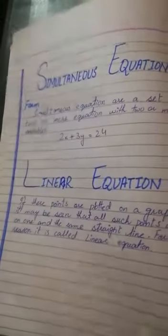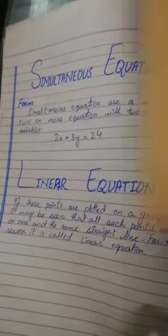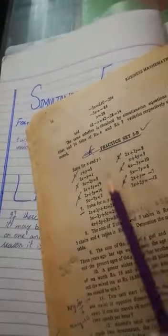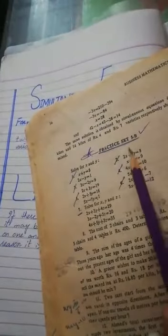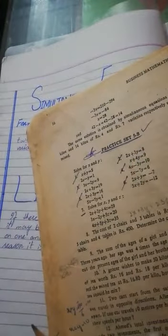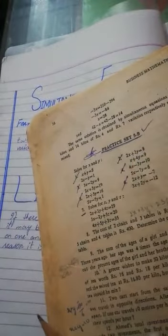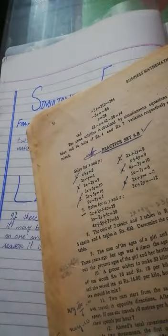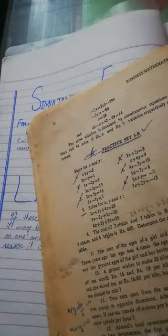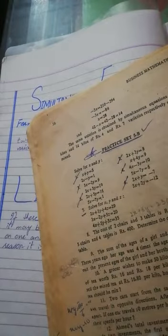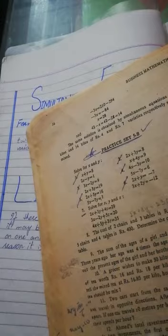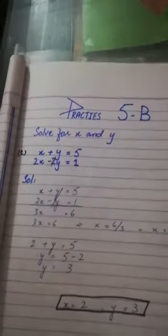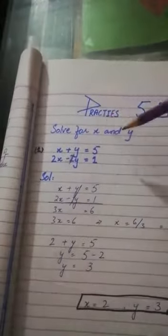If you look at page number 56, it will be Exercise 5B, which is related to simultaneous and linear equations. The first question is: x plus y is equal to 5, and 2x minus y is equal to 1. This is a simultaneous equation because two conditions are given. If we start to solve it, we will find the x and y values.